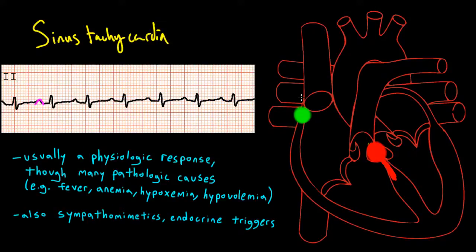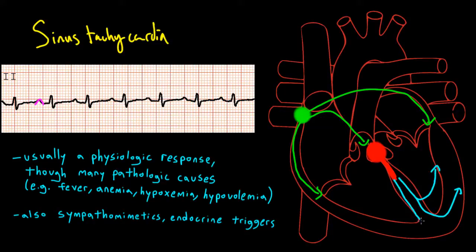In sinus tachycardia, the signal starts at the SA node and gets propagated through the atrial tissue, leading to an atrial contraction and a normal P wave. It pauses at the AV node and then leads to ventricular depolarization and repolarization, which are the QRS and the T wave, respectively.